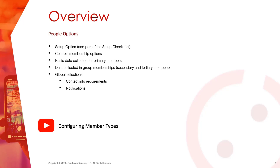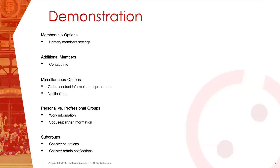We recommend taking a peek at last week's webinar if you missed it. Today's agenda covers membership options, contact info options for additional members, global contact information requirement settings, notifications, and options for different types of organizations — personal hobby-based organizations versus professional associations. We'll also cover additional options for organizations with subgroups.